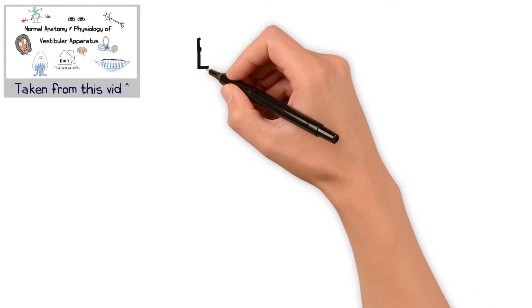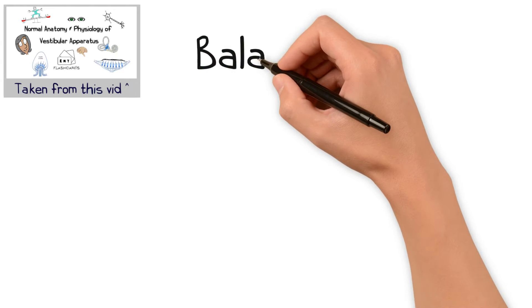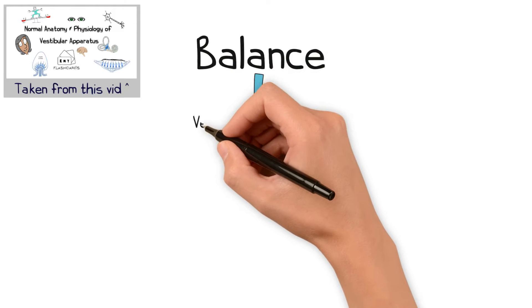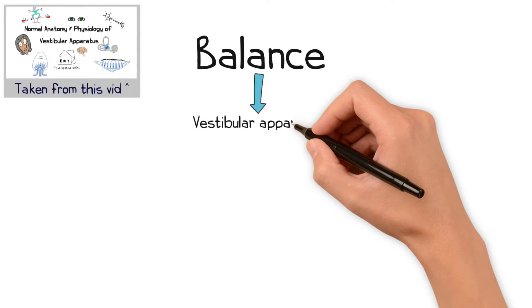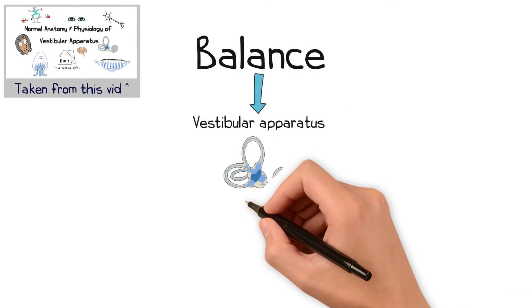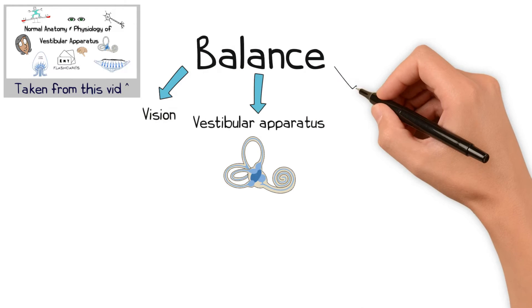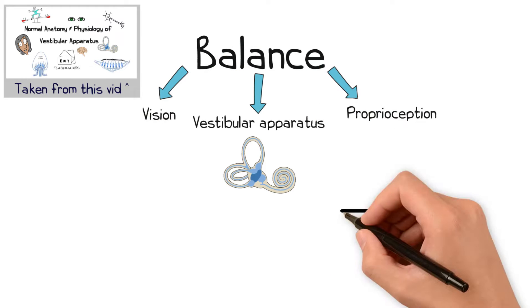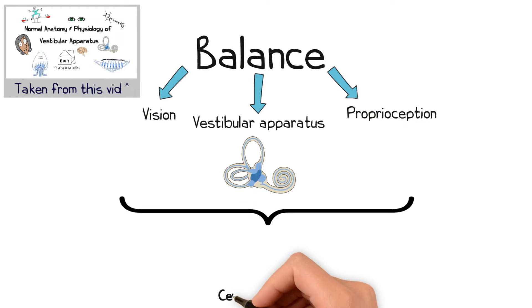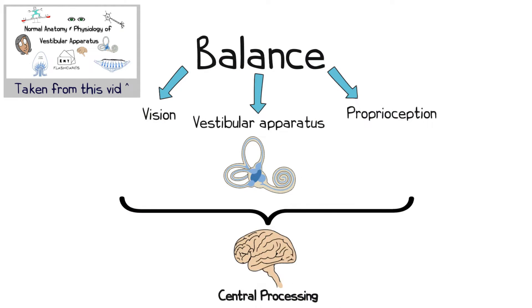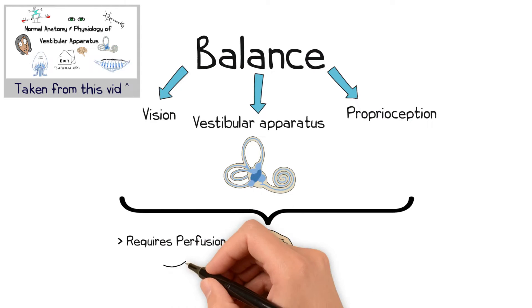To recap, our sense of balance is derived from multiple sensory afferents, including the vestibular apparatus, but also vision and proprioception. These inputs are processed by the brain, which itself requires adequate perfusion to function.